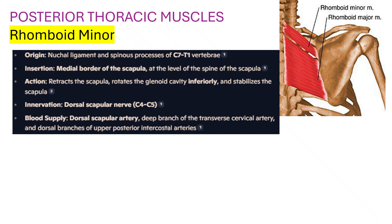Rhomboid minor — this smaller muscle: origin is the nuchal ligament and spinous processes of C7–T1 vertebrae. Insertion is the medial border of the scapula at the level of the spine of the scapula. Action: retracts the scapula, rotates the glenoid cavity inferiorly, and stabilizes the scapula.